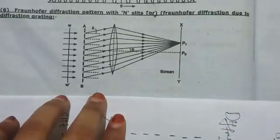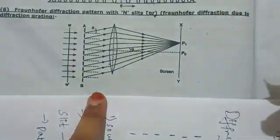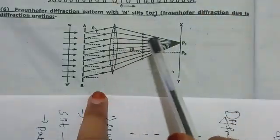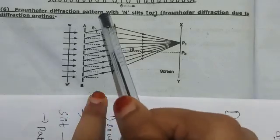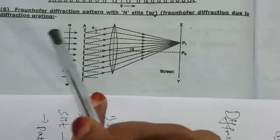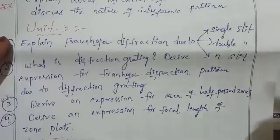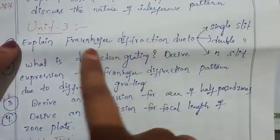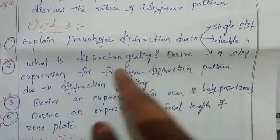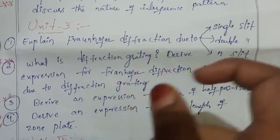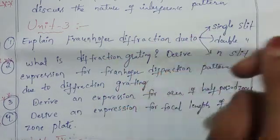Hi guys, welcome or welcome back. Today we are going to discuss one of the important questions from fourth semester of physics. The question is: what is diffraction grating, and derive the expression for Fraunhofer diffraction pattern with N slits, also known as Fraunhofer diffraction due to diffraction grating.